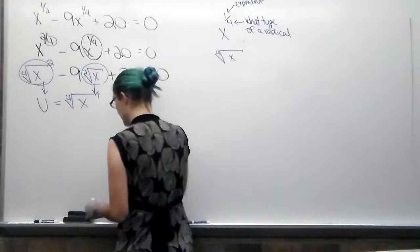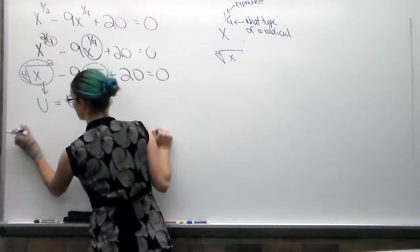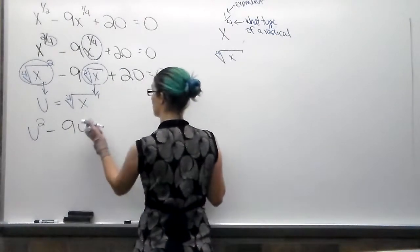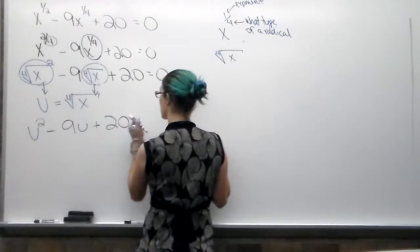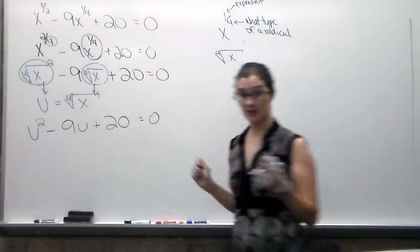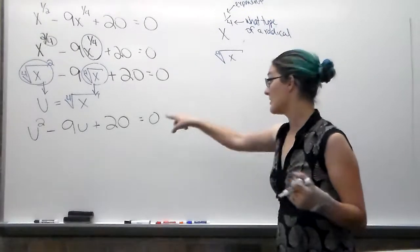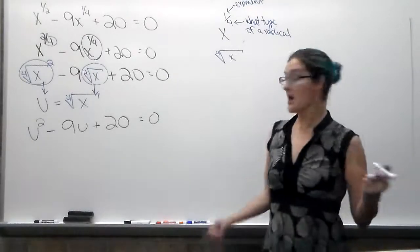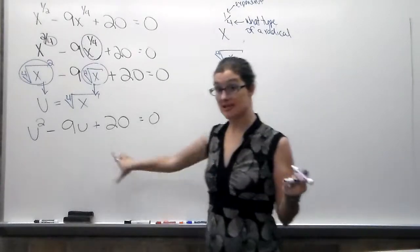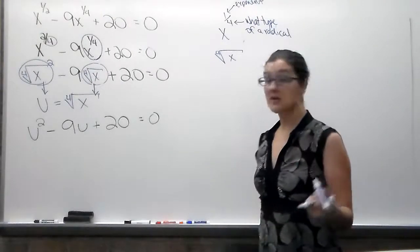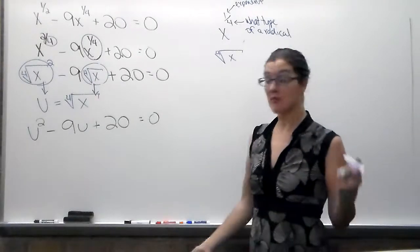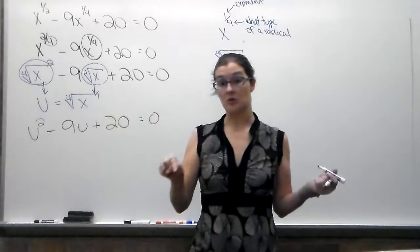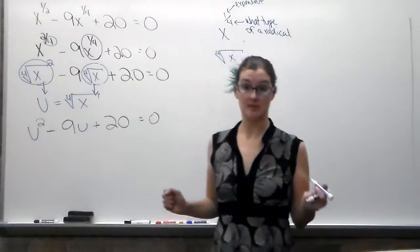So this leaves us with u squared minus 9u plus 20 equals 0. That looks a whole lot better. I can work with that. That could factor. If it can't factor, which sometimes it can, sometimes it cannot, all you would do is quadratic formula. But remember with the quadratic formula, you have a u. So it's u equals, not x equals. You've got to make sure you keep the variable that you're using.